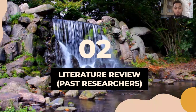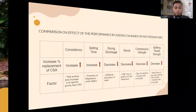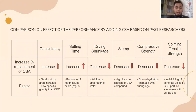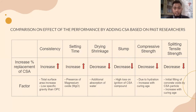I will proceed briefly about the literature review based on past research. This is the comparison of the effect of performance by CSA based on past research. I focused on three properties: the slump, the compressive strength, and the splitting tensile strength, as these are what I tested in FY22. Based on past research, the slump decreases when we increase the percentage replacement of CSA. The same trend applies to compressive strength and splitting tensile strength, due to many factors visible in the slide.